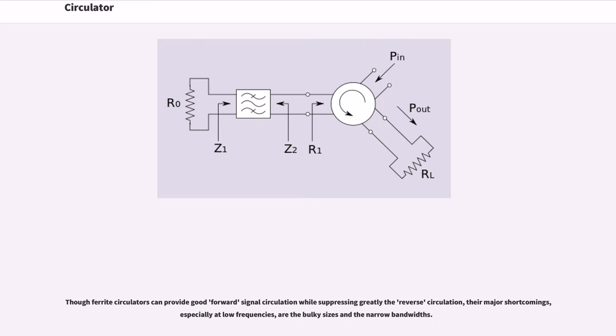Though ferrite circulators can provide good forward signal circulation while suppressing greatly the reverse circulation, their major shortcomings, especially at low frequencies, are the bulky sizes and the narrow bandwidths.